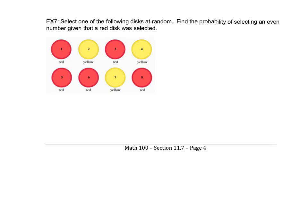Example 7: we have eight discs — three yellow and five red. We select a disc at random and want to find the probability of selecting an even number given that a red disc was selected. Replacing 'given that' with 'from': find the probability of an even number from the red discs. Since we're only choosing from the 5 red discs, and of those, the numbers 6 and 8 are even, that gives 2 out of 5.